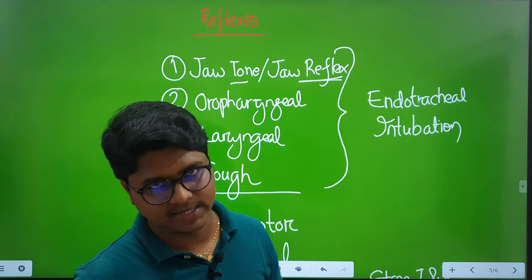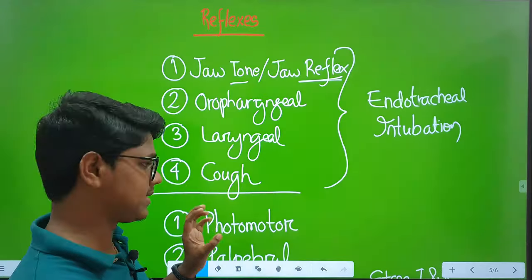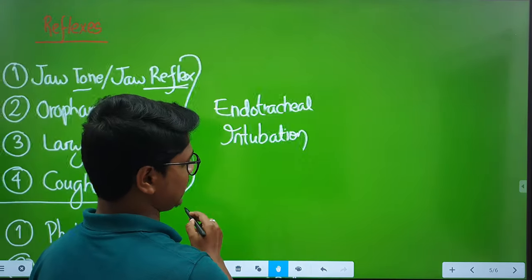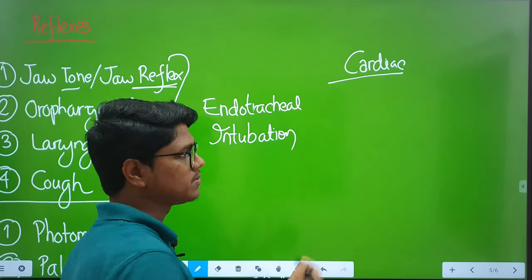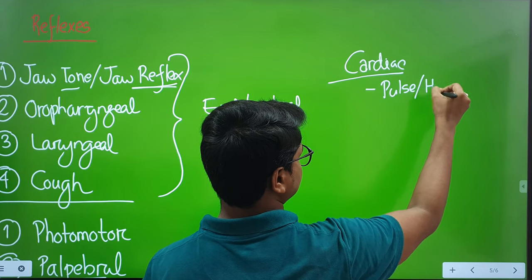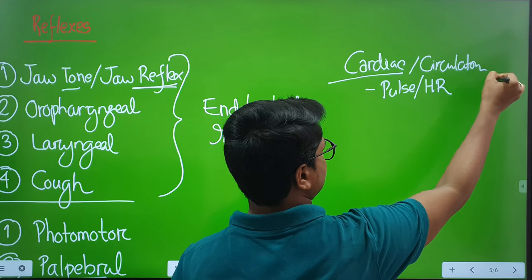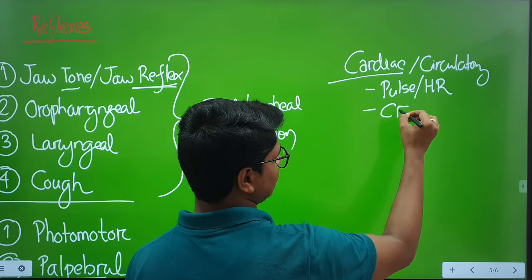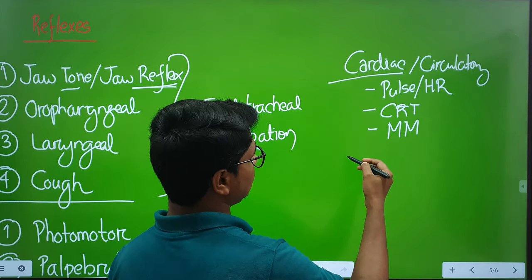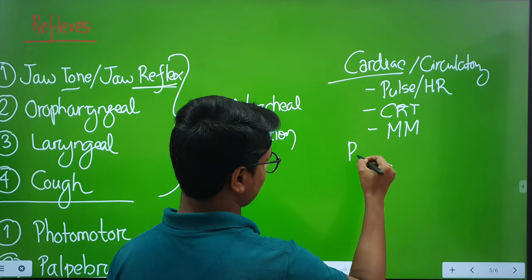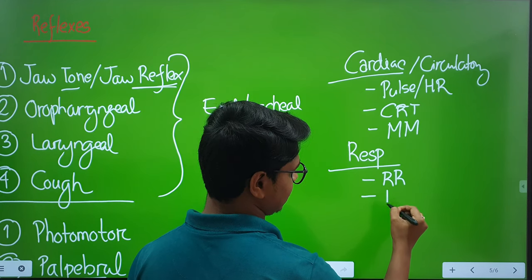Apart from reflexes, there are other parameters to be checked. The cardiac or circulatory parameters: you have to check pulse or heart rate, then CRT — the capillary refill time — then mucous membrane. Next come the respiratory parameters: you have to measure the respiration rate and the respiration pattern. The cardiopulmonary system is the most important system in anesthesia, so you have to continuously check these parameters.